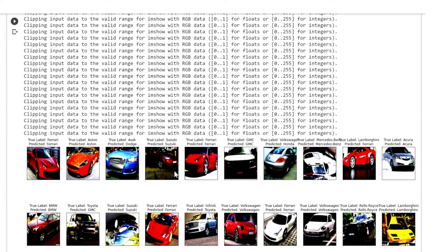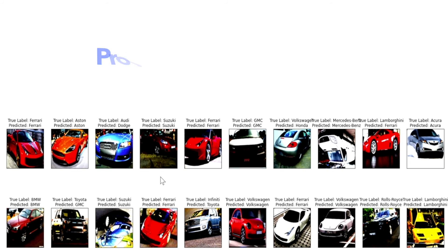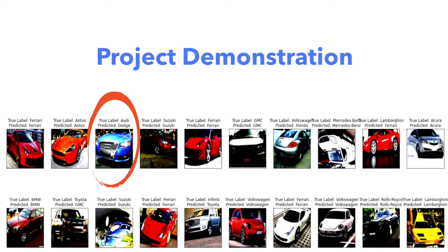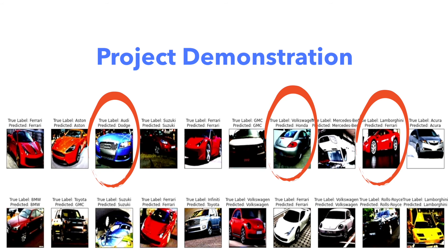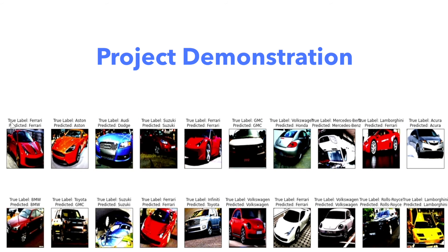And here are the results. Out of the 20 images, the model made 5 incorrect predictions, where the true label is shown at the top and the predicted label at the bottom. So the accuracy is 15 out of 20, which is not bad. Looking at these pictures, if you're not an automotive enthusiast, it is very hard to tell the make of the car out of 25 different labels.